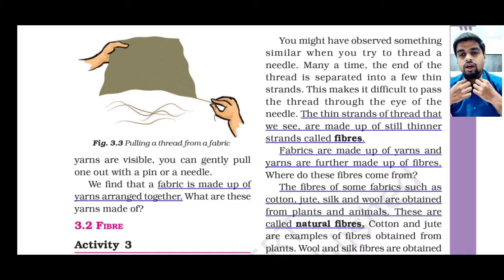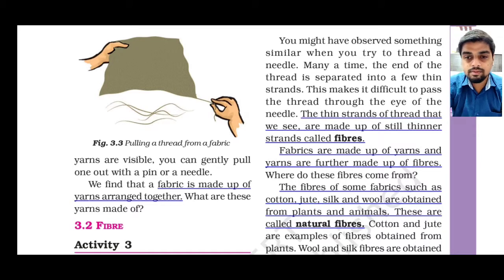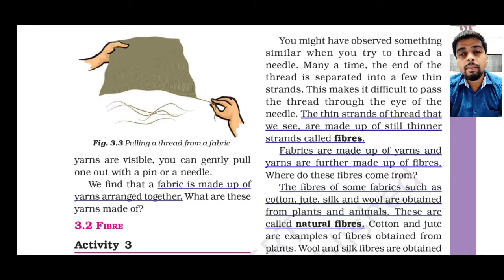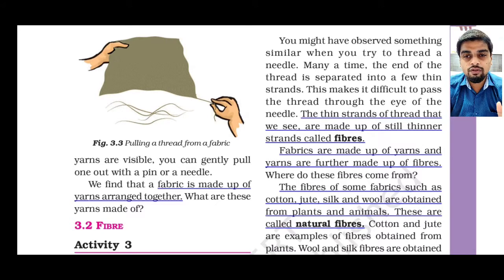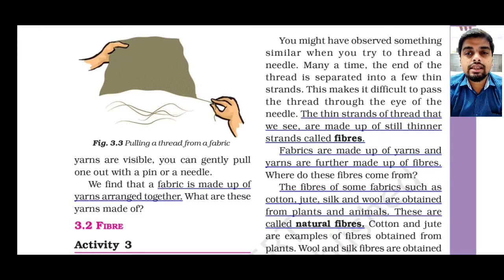If we put two or more fibers together and spin them, they can form yarn, and yarn can form fabric. From fabric, we can make different types of clothes. So: clothes are made up of fabric, fabric is made up of yarn, and yarns are made up of many fibers. The first and most important definition of this chapter is: fiber is a thin, elongated, thread-like material.